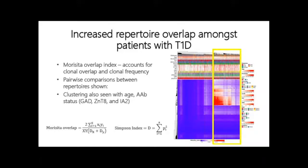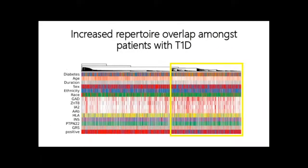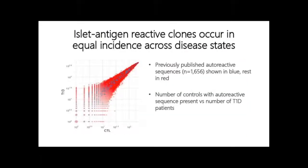We also looked at pairwise overlap between repertoires to see if there was increased overlap within type 1s. Using the Morisita overlap index, which looks at both overlap of clonal sequence and clonal frequency, we again see two main clusters, with the right cluster being more enriched for type 1s. We also see clustering by autoantibody status, which is interesting. We then looked at the presence of previously published autoreactive sequences in our dataset. Interestingly, those previously published autoreactive clones appear with equal incidence in type 1s and controls.